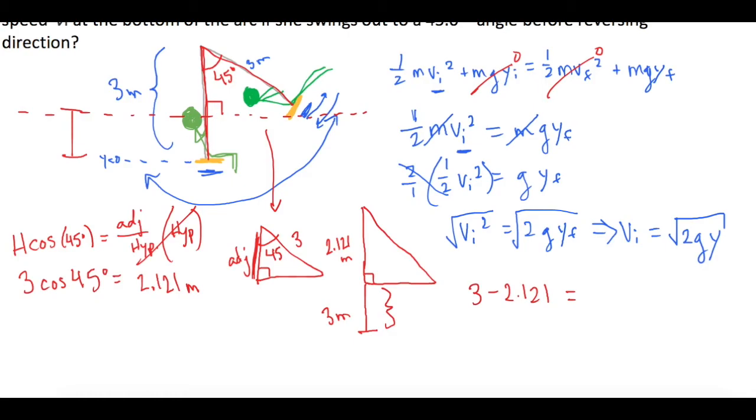So if we take 3 minus 2.121, that will tell us this distance right here, which is our delta y. So our delta y, in this case, is 0.8787 meters.